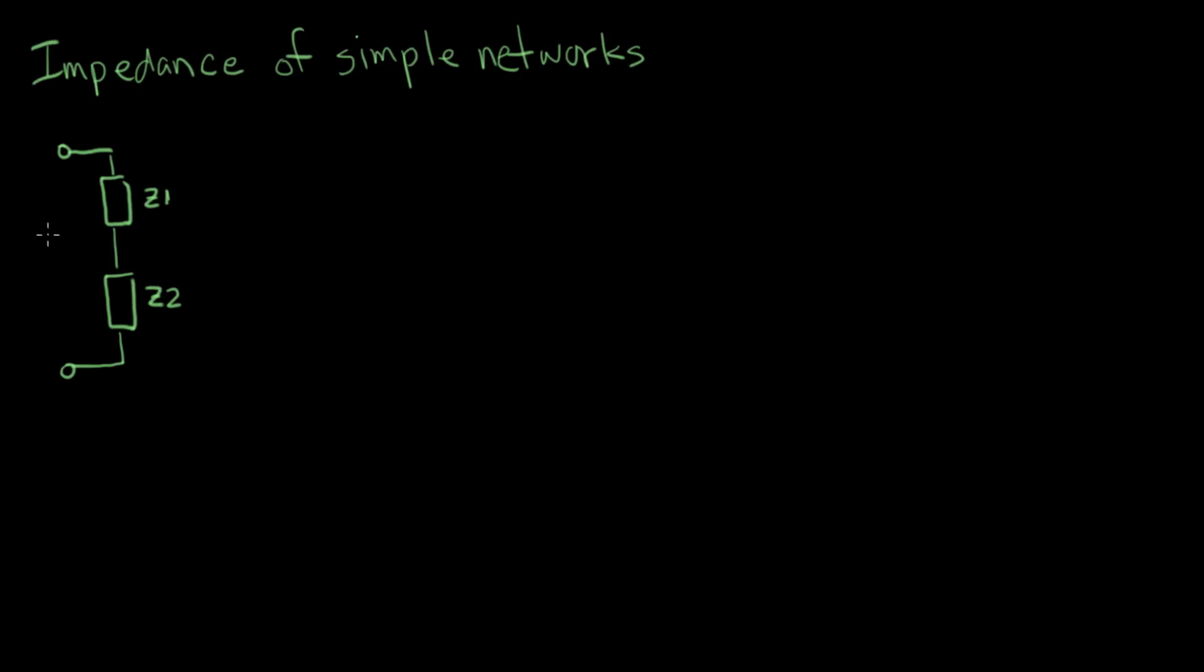Let's talk about the idea of the impedance of some simple networks. Now what I've shown here is a very simple network. It has two impedances in it, Z1 and Z2. And inside these boxes are one of our favorite passive components, either an R, an L, or a C. We're gonna look at combinations of this and figure out what the impedance of simple combinations are.